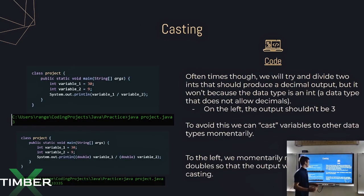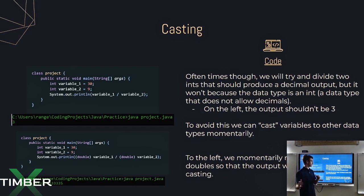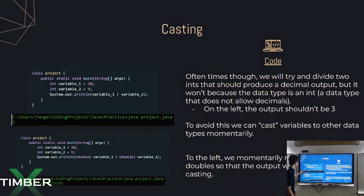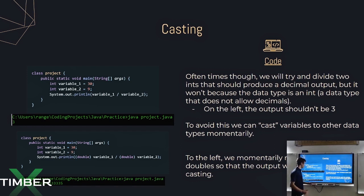So how about casting? Oftentimes we will try to divide ints that should produce a decimal output, but they won't because the data type being an int won't allow for decimal output. For example, dividing 30 by nine shouldn't be three — it would actually be 3.3 repeating. In order to get that without actually changing the data type, we use casting, which is a very useful tool, especially for trying to make low-memory-based applications.